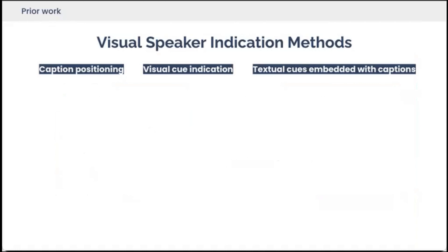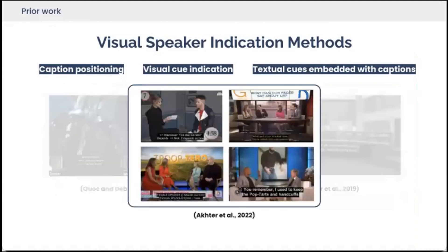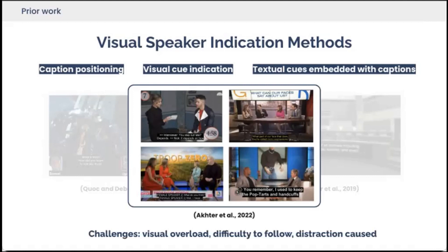Previous works on speaker indications have been focused on visual methods, including caption positioning, visual cue indications, and textual cues embedded with captions. For example, using avatars with character images and names, or replacing a light bulb to indicate the current speaker. Researchers have also investigated DHH viewers' preferences for visual-based speaker indication methods like color captions and speaker names. Many challenges have been found using visual methods, such as visual overload, difficulty to follow, and distraction costs in multi-speaker scenarios.